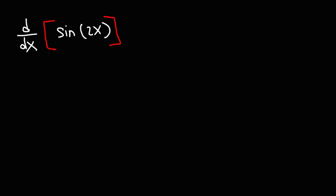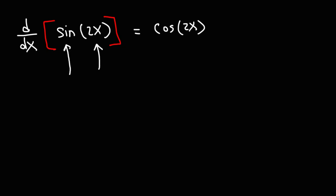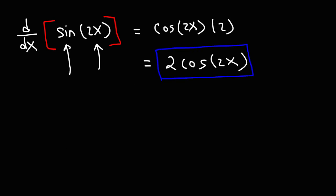What is the derivative of sine of 2x? Here's what you could do to find the answer. First, find the derivative of sine — the derivative of sine is cosine. The angle inside of sine will be the same angle of cosine. Next, work your way towards the inside. The derivative of 2x is 2, so you can write the final answer as 2 cosine 2x. That's the derivative of sine 2x.